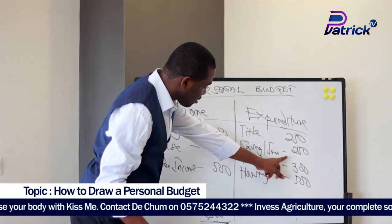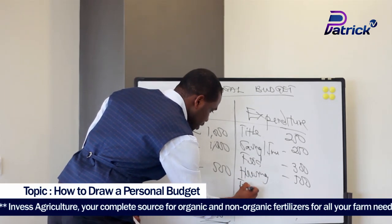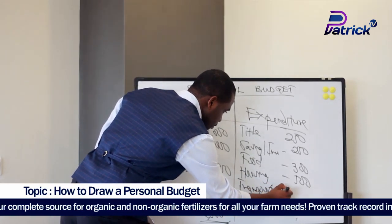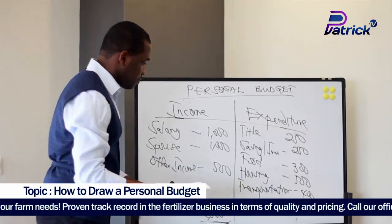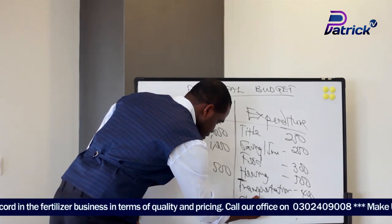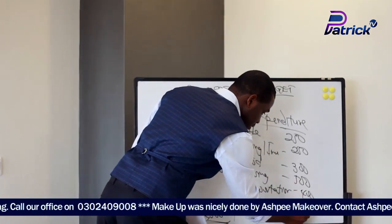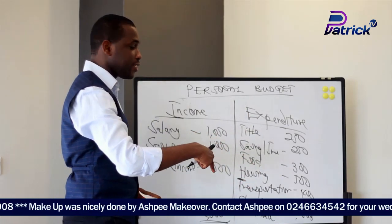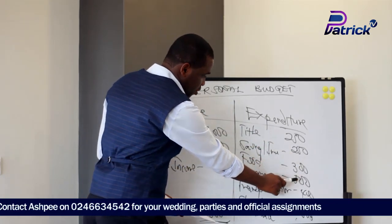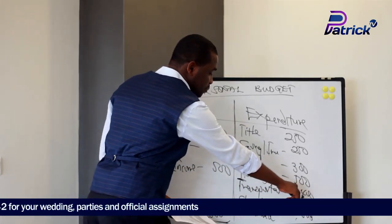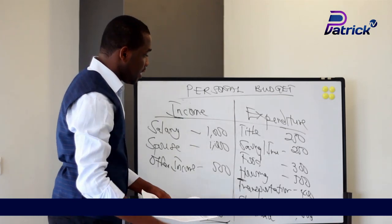That housing allocation of 500 cedis leaves us with 1,200 cedis. Then transportation: let's say it is around 400 cedis, leaving 800 cedis. Then charity: let's say 200 cedis. You also have an insurance package — let's say that costs about 300 cedis. So tallying up: 250 tithe + 250 savings = 500, plus 300 food = 800, plus 500 housing = 1,300, plus 400 transportation = 1,700, plus 200 charity = 1,900, plus 300 insurance = 2,200 cedis.